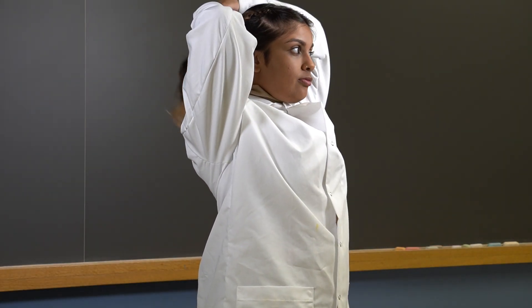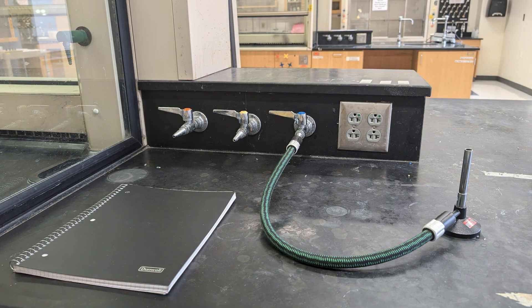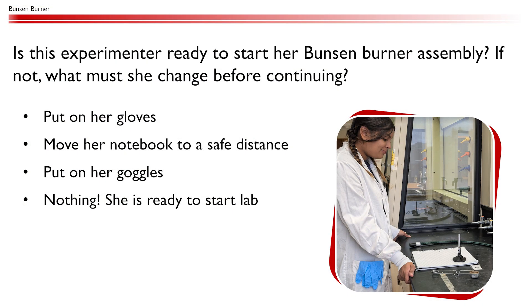Before we light the burner, we should ensure that all hair is kept back and all flammable materials such as notebooks and organic solvents are kept at a far distance. Is this experimenter ready to start her Bunsen burner assembly? If not, what must she change before continuing?